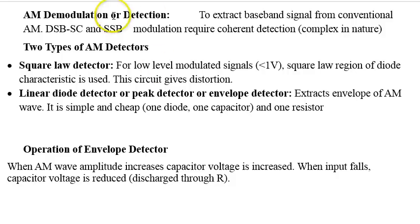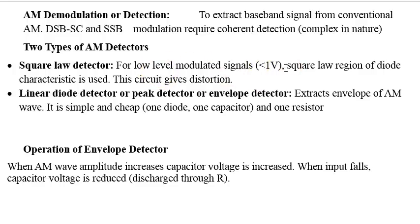For AM demodulation, to extract the baseband signal from conventional AM we use an envelope detector. For DSB-SC and SSB, conventional envelope detection cannot be used — coherent detection is required, which is complex and costly. Two types of AM detectors exist: the square law type (for low-level modulated signals, using the square law region of the diode), and the linear diode detector (also called peak detector or envelope detector). The latter uses only one diode, one capacitor, and one resistor — simple and cheap.